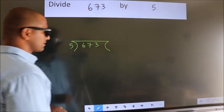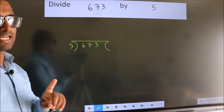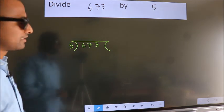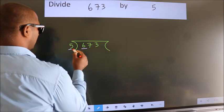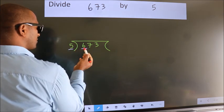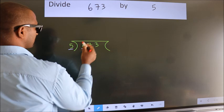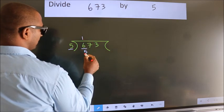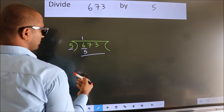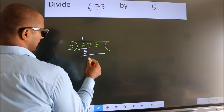This is your step 1. Here we have 6, here 5. A number close to 6 in 5 table is 5 once 5. Now we should subtract. We get 1.